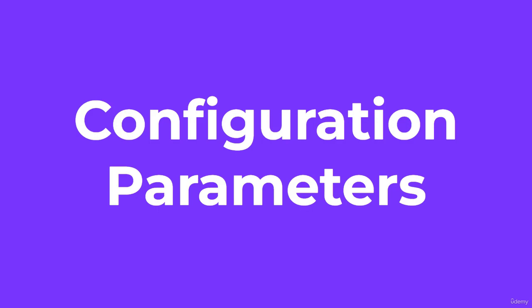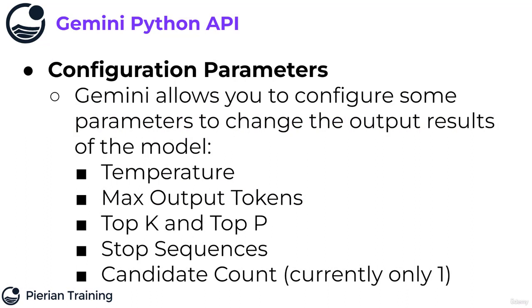Welcome everyone! To complete this section of the course, let's discuss configuration parameters. Gemini allows you to configure some parameters to change the output results of the model. These parameters include temperature, max output tokens, top K and top P, stop sequences, and candidate count.